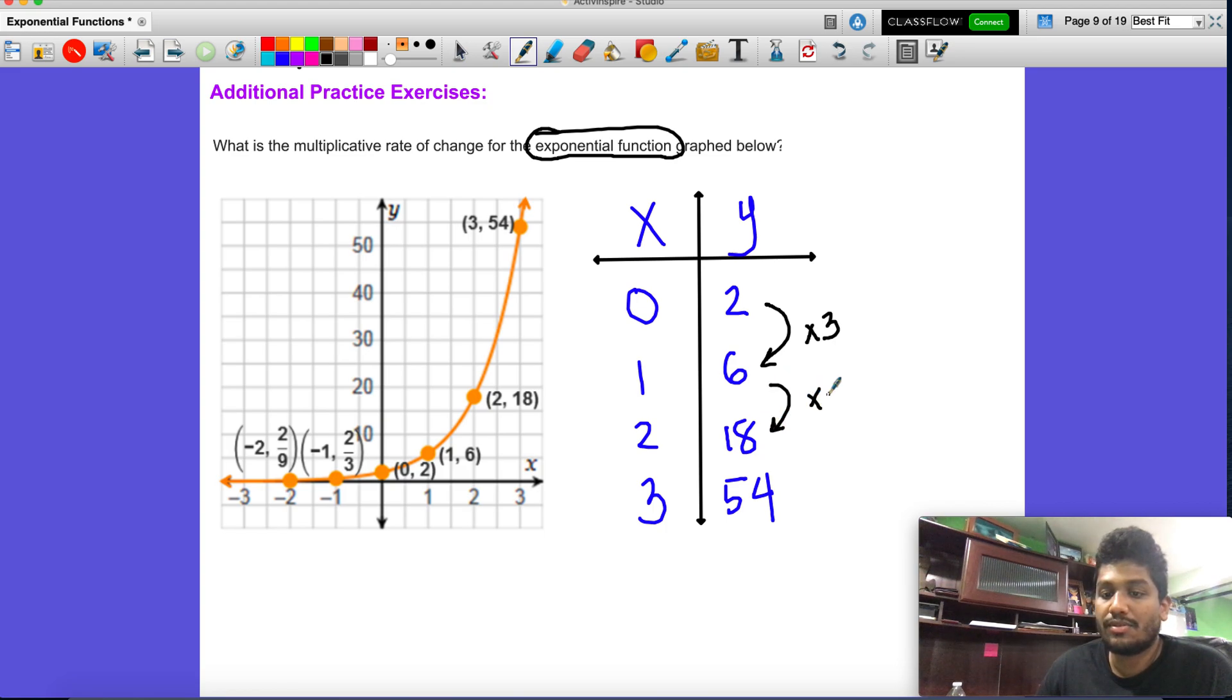So 6 times 3 equals 18. Does 18 times 3 give you 54? If so, and it does, this tells us that this is going to be a b, which is our multiplicative.